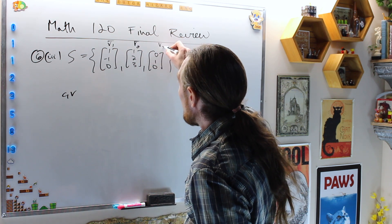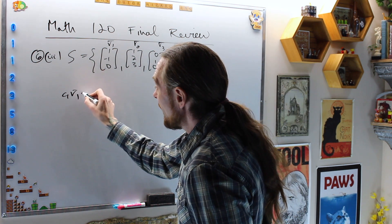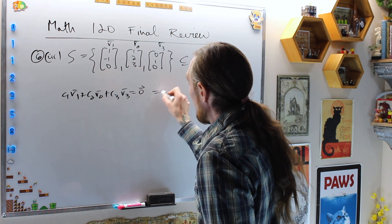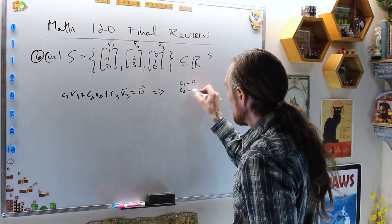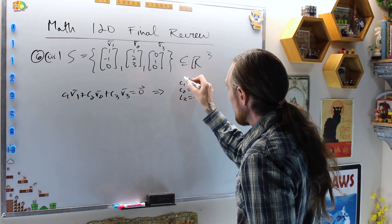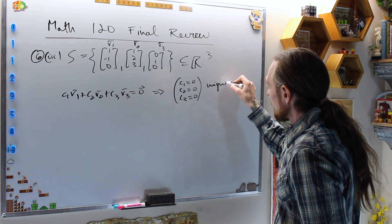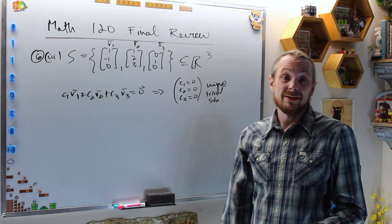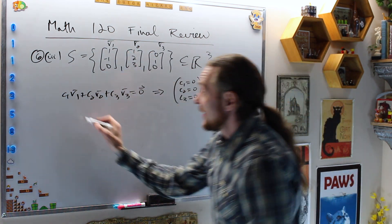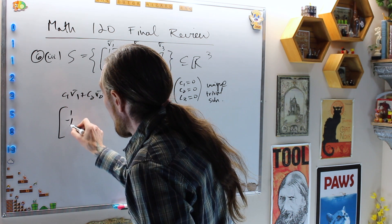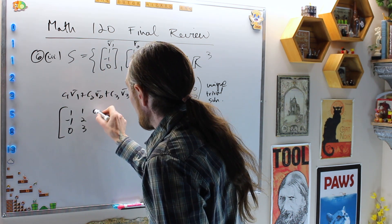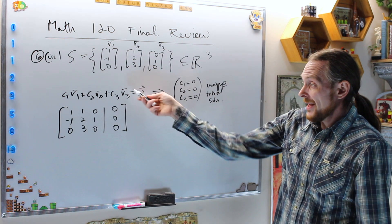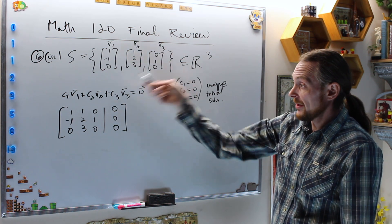The independence question asks: if c₁v₁ + c₂v₂ + c₃v₃ = 0, does that imply c₁ = 0, c₂ = 0, c₃ = 0 — the unique trivial solution? For us that gives the augmented matrix [1, −1, 0 | 0; 1, 2, 3 | 0; 0, 1, 0 | 0] from v₁, v₂, and v₃.